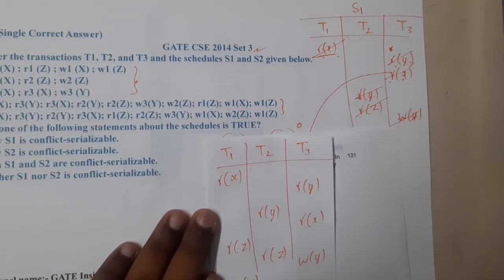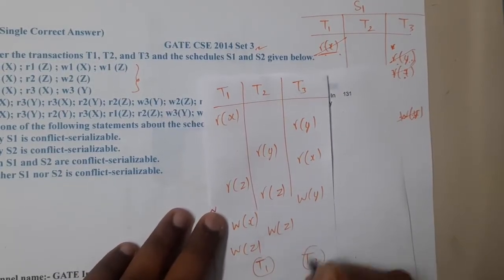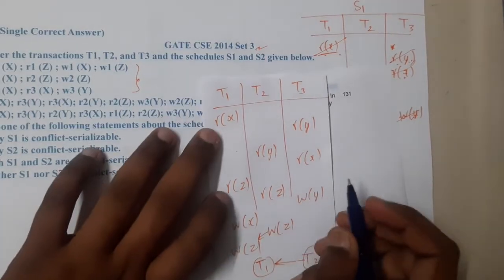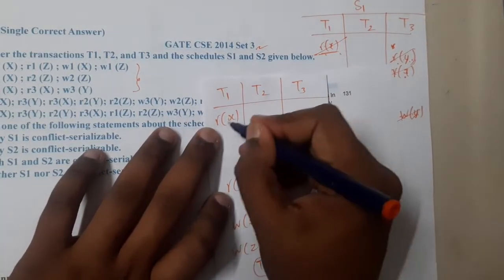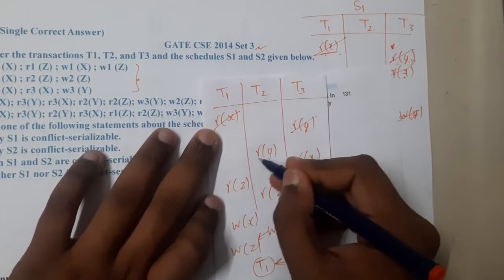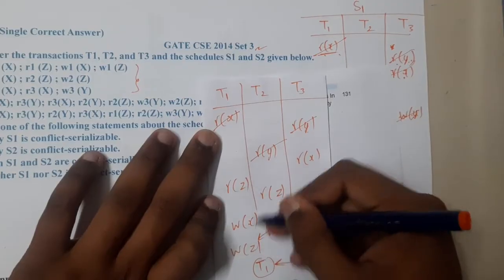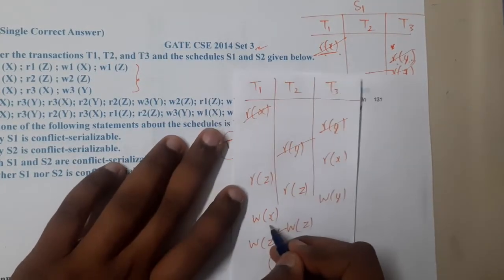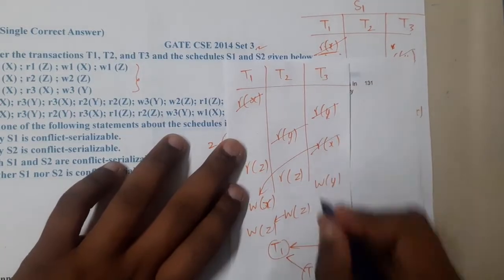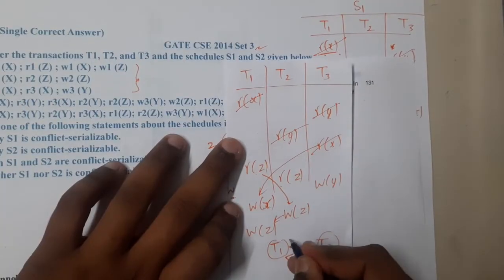Continuing S2: Write(Z), Write(Z). Now let us build the precedence graph for S2. Read(X) in T1 — no write of X in other columns, no issue. Read(Y) — no write of Y, no issue. Read(X) in T2 clashes with Write(X) in T3, giving edge T3→T1. Read(Z) in T1 clashes with Write(Z) in T2, giving edge T1→T2.